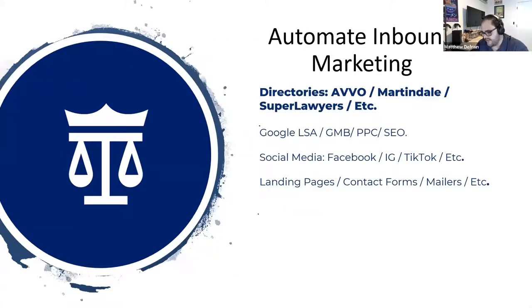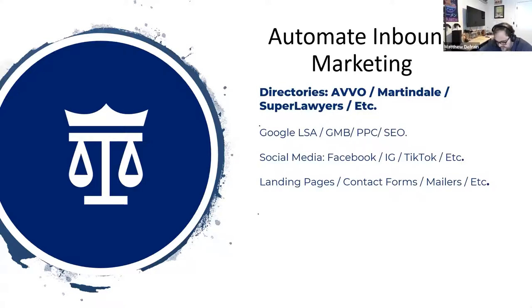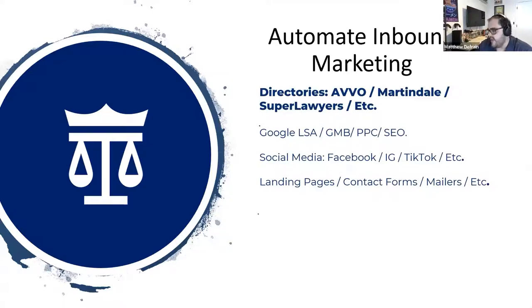Let's talk about inbound marketing first. A lot of firms do a good amount of inbound marketing — it's where a majority of the marketing spend comes from. Inbound marketing can be anything from your directories such as Avvo, Martindale, and Super Lawyers, to your Google products, your social media, and your landing pages. The most important part of automating these inbound marketing efforts is to make sure that everything is communicating with each other. You want to make it a simple and seamless process. First, we have to simplify before we automate. We have to make sure everything pulls into a single source that we can attack at once. We don't want it to be staggered, manual, or go to an email inbox and never hear from us again. Everything needs a clear drive and a process to move forward, which will help you convert more leads and make your marketing spend much more valuable — you get a bigger ROI.